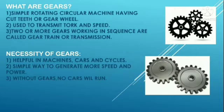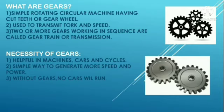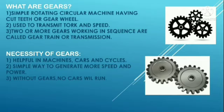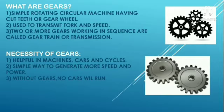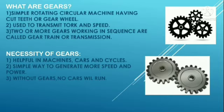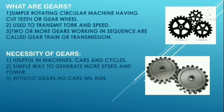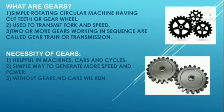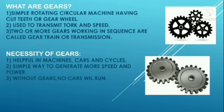A gear is a rotating circular machine part having cut teeth, or in the case of a bevel or gear wheel, inserted teeth which mesh with another toothed part to transmit torque and speed. The basic principle behind the operation of a gear is analogous to the basic principle of levers. Two or more machine gears working in a sequence are called a gear train or a transmission. Gears are helpful in machines of all kinds, not just cars and cycles. They are a simple way to generate more speed, torque, or force, or send the force of a machine off in another direction.